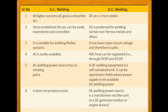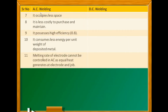DC power source can be a DC generator, motor, or engine-driven unit. In the case of AC welding, it occupies less space; DC takes up more space. AC is less costly to purchase and maintain, and it processes with high efficiency up to 80 percent. It consumes less energy per unit weight of deposited metal. The melting rate of the electrode cannot be controlled in AC, as equal heat is generated at the electrode and the job.